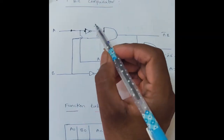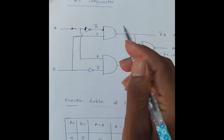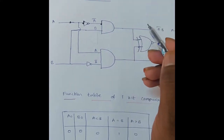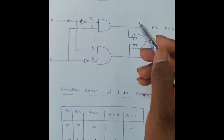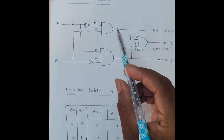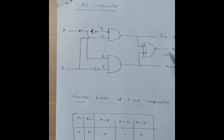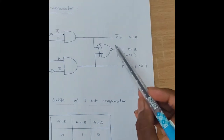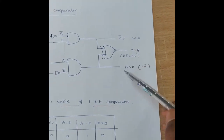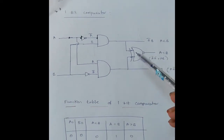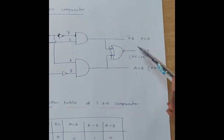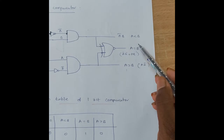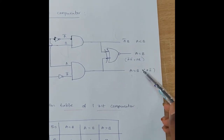Today's experiment is the one-bit comparator, which is used to compare the magnitude of two numbers. Each number has one bit. This is the circuit diagram of the one-bit comparator. Here A and B are the inputs, and there are three outputs: A less than B, A equal to B, and A greater than B.